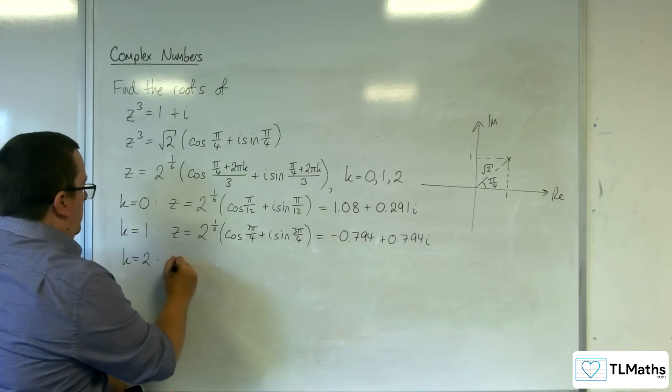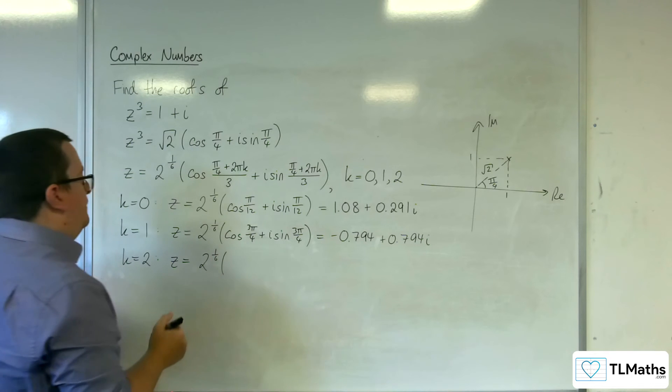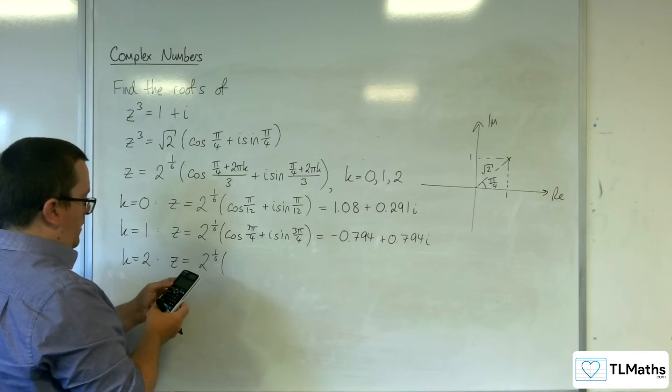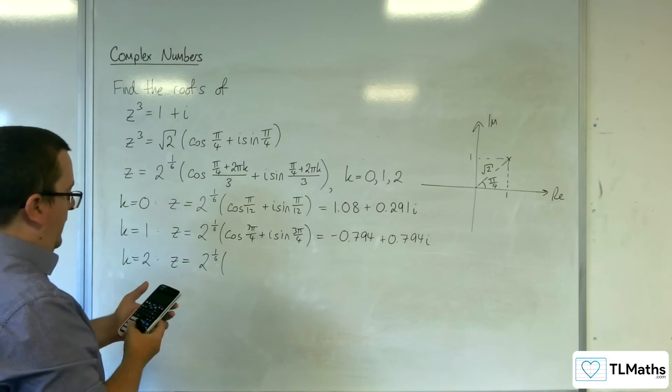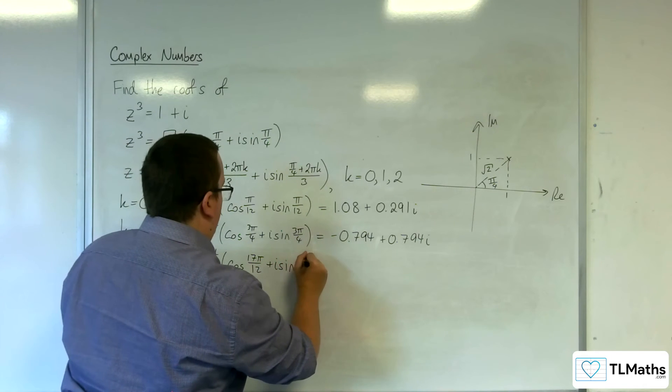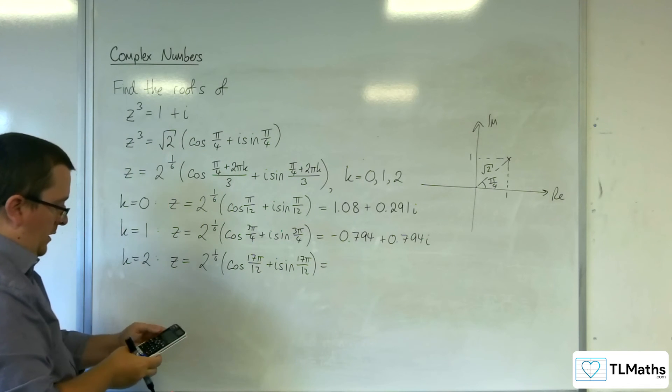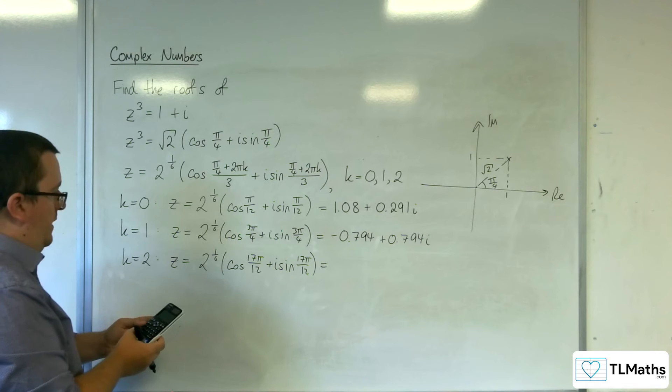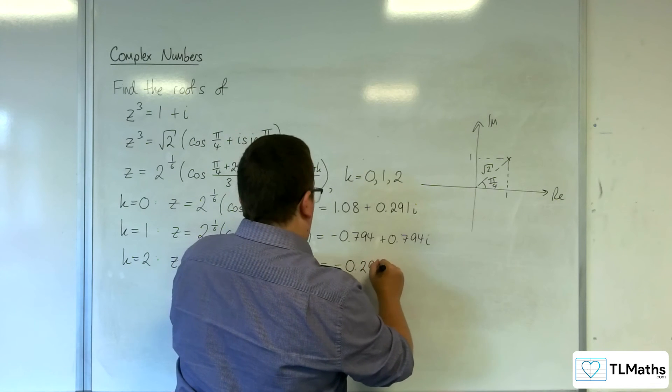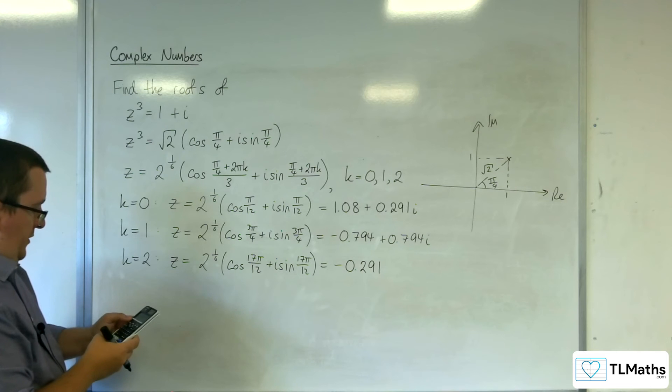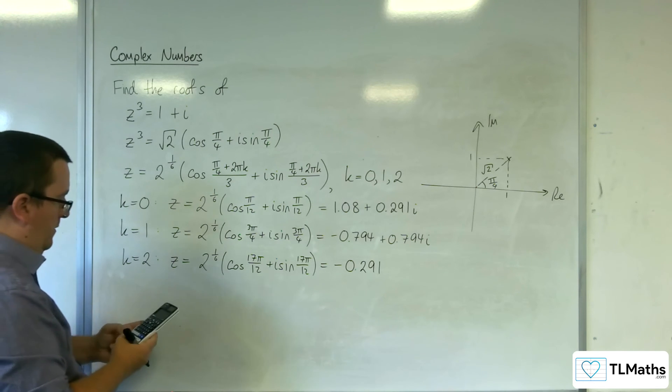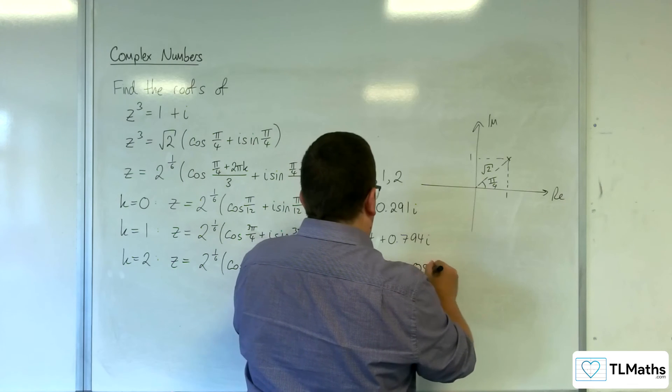And when k is equal to 2, we get 2 to the power of 1 sixth times, we've got pi over 4 plus 2 pi times 2, and then we divide that by 3, so we get 17 pi over 12. So cosine of 17 pi over 12 plus i sine 17 pi over 12. So 2 to the power of 1 sixth times cosine of 17 pi over 12, minus 0.291, and 2 to the power of 1 sixth times sine of 17 pi over 12, take away 1.08i.